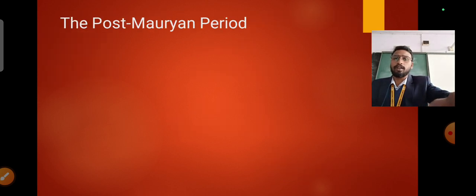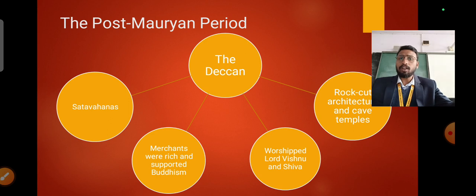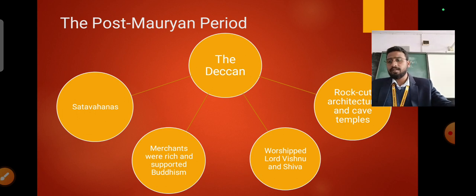The post Mauryan period when we talk about the Deccan side, the Deccan side was taken over by the Satavahanas. They were the successors of the Mauryans in the Deccan and they nearly ruled for around 300 years which is from 1st century BC to AD 220.